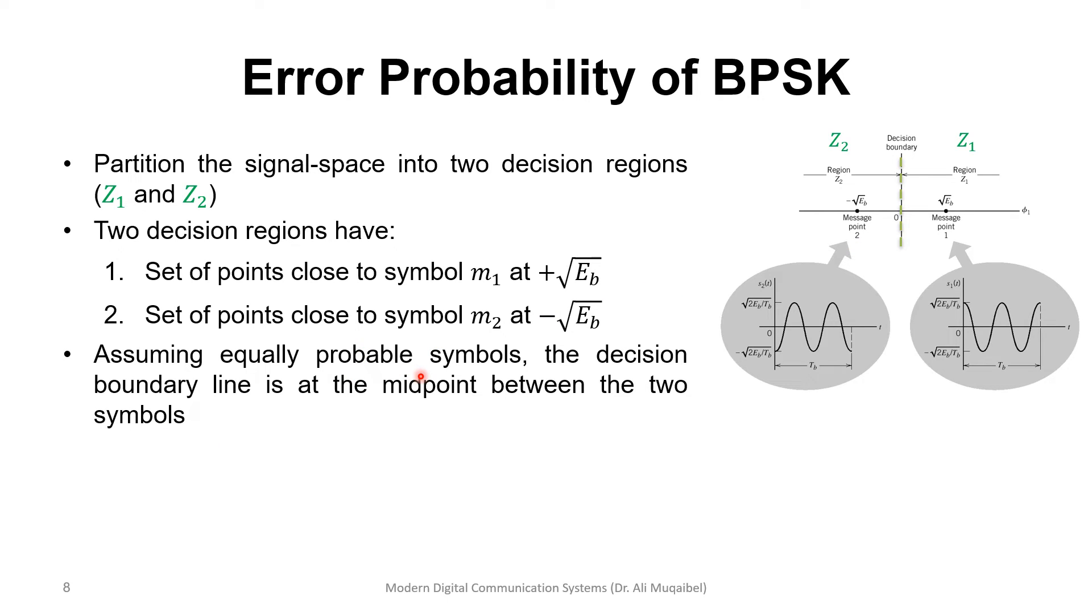Now, assuming equally likely, equally probable symbols, the decision boundary, of course, will be minimum distance, which is the midpoint between the two symbols. We have seen this with baseband, but now, as we say, we can see it with band-pass communication. We'll also get the similar optimum threshold in case of non-equal a priori probabilities. Then, let's say this is P0, probability of sending zero or sending one. We can adjust the threshold accordingly to get the optimum threshold. So, in a similar way, since we are dealing with geometry, it doesn't matter whether we are dealing with baseband or band-pass.